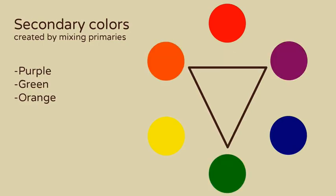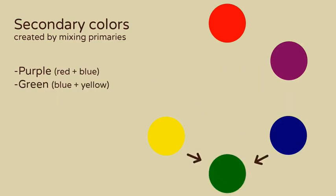Purple, green, and orange are created by mixing primary colors. Red and blue makes purple, blue and yellow makes green, and yellow and red makes orange.